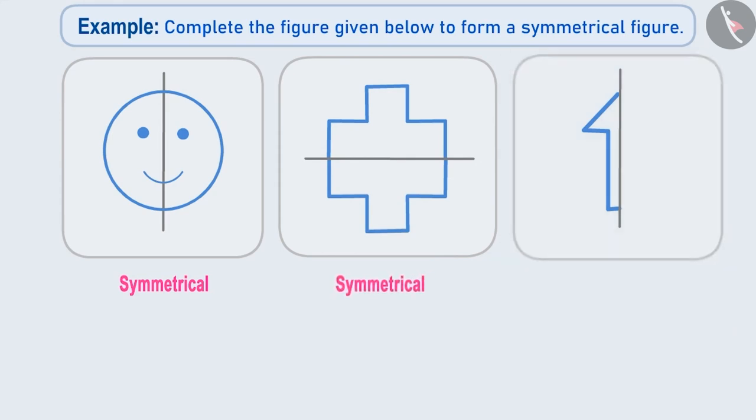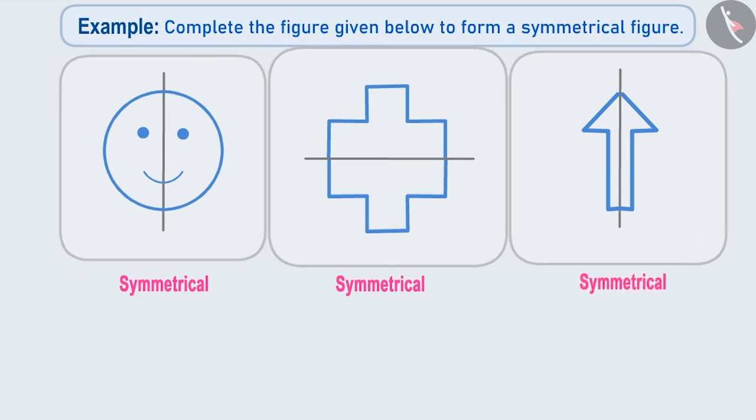Similarly, if we complete the third figure, then we will get the shape of an arrow. It is also a symmetrical figure.